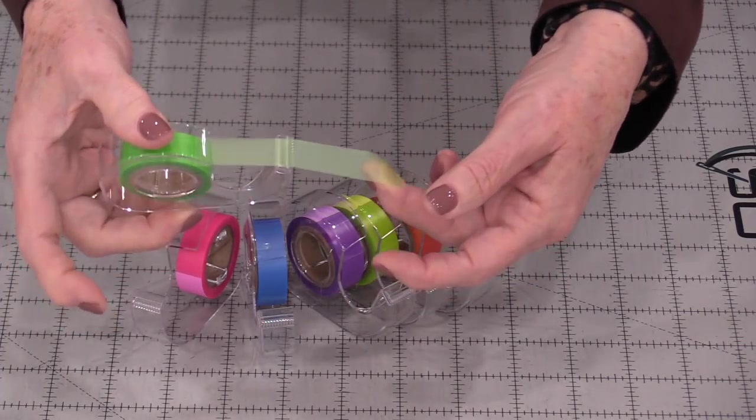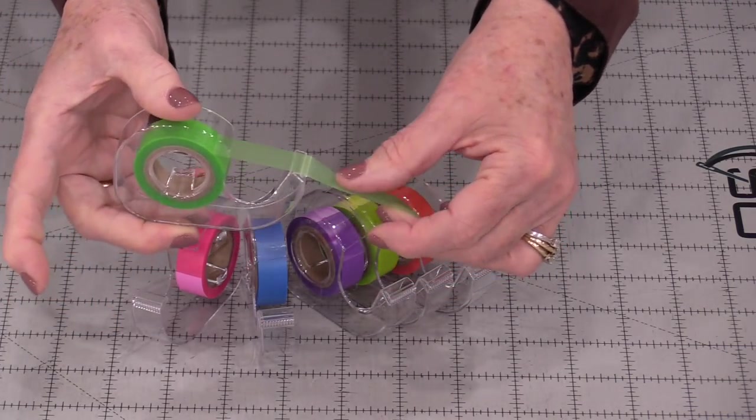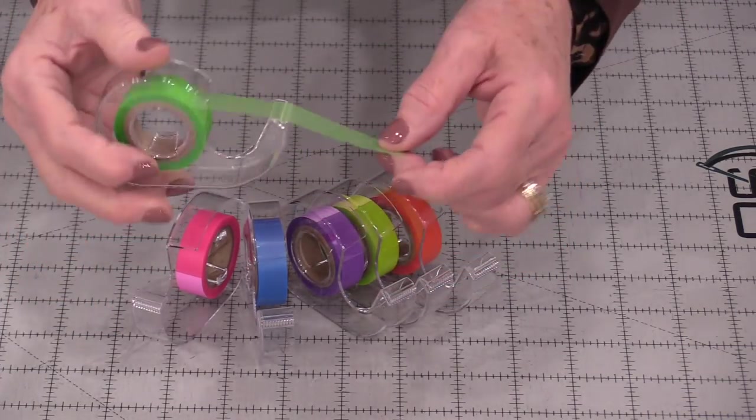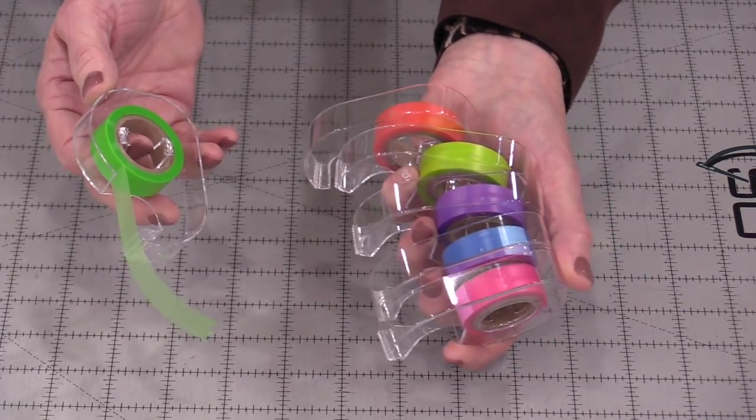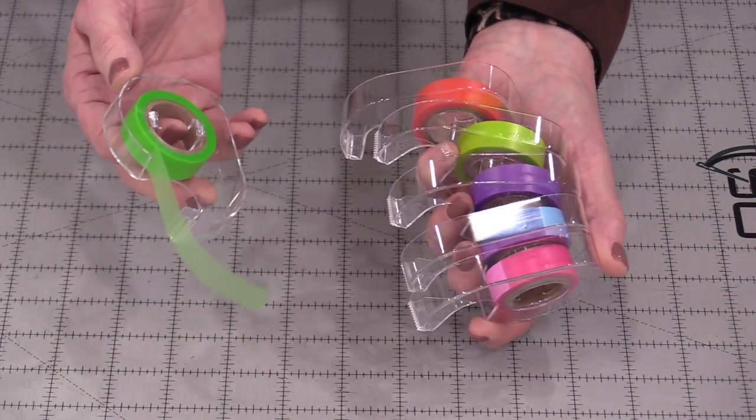Highlighter tape is not scotch tape. It's a tape designed to help us in sewing. The most popular use is for rulers. Different colors show up better on different fabrics.